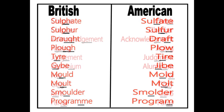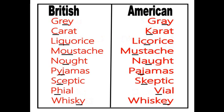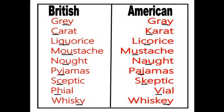More examples of British and American spelling differences: program, check, checker, acknowledgement, aging, judgment, aluminum, ax, cozy, curb, furor, gray, carrot, licorice, mustache, pajamas, skeptic, vile, whiskey.